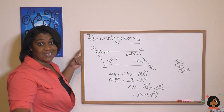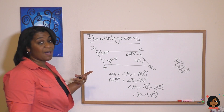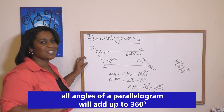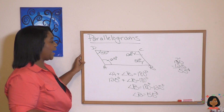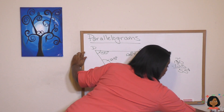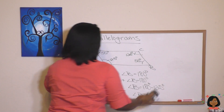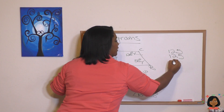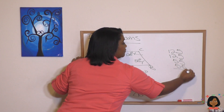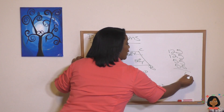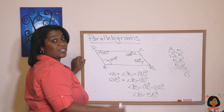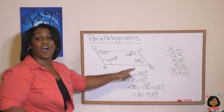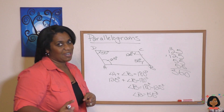Here's the final test: if all these angles add up to 360 degrees, we've done our job. Let's check — we're going to add 125, 125, 55, and 55. They all add up to 360 degrees, so we've done our job correctly.